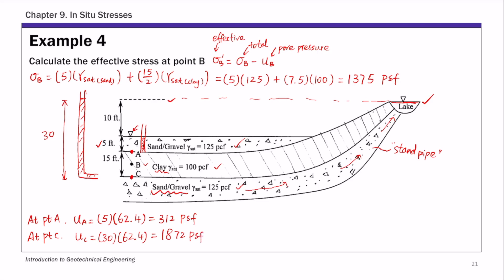Once you have the pore pressures at point A and C, then at point B use interpolation. Since it's at the middle of the clay layer, UB is one half times UA plus UC. That gives us the pore pressure at B is 1092 PSF.